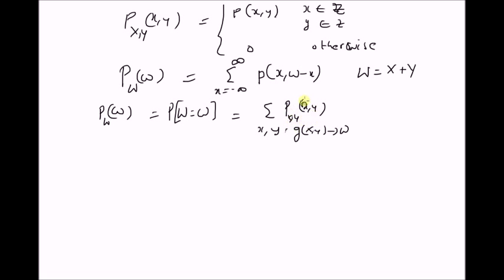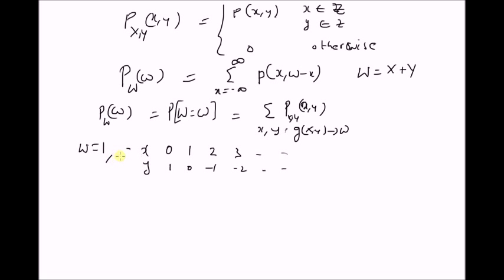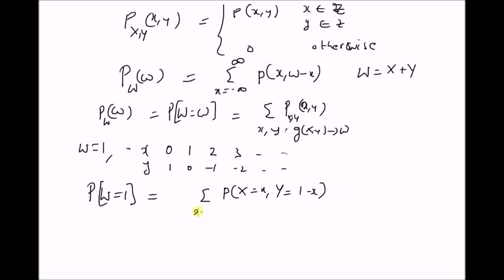For example, we want to find the probability of W equal to 1. We can clearly see that for pairs (x, y) such as (0,1), (1,0), (-1, -1) — wait, actually for x equal to 0, y equal to 1; x equal to 1, y equal to 0; x equal to -1, y equal to 2 — no — x equal to 3, y equal to minus 2, the sum x plus y equals 1, mapping to W equal to 1. Therefore, the probability of W equal to 1 is the summation of p(x, 1 minus x) for all x from minus infinity to plus infinity, since for each x there is a corresponding y satisfying W = X + Y, and we add all those joint PMF values.